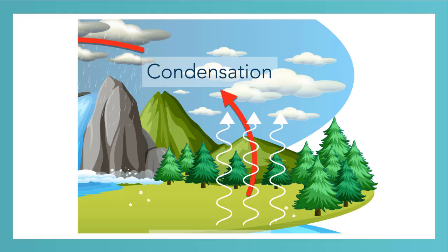When the water vapor cools to become water droplets, it is called condensation. These water droplets are stored in clouds as rain or snow.